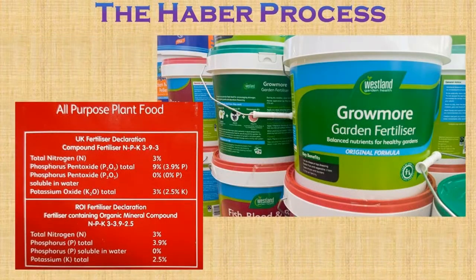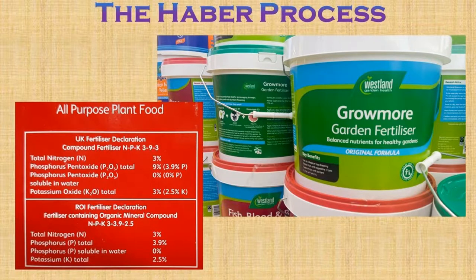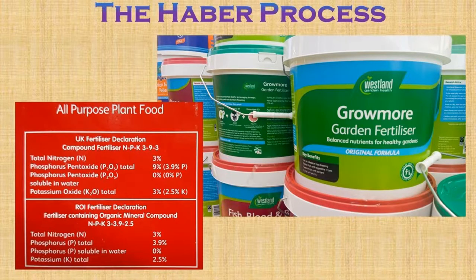Most fertilizers used by commercial farmers are inorganic fertilizers. On the packets you will see NPK values. These refer to the percentages of nitrogen, phosphorus and potassium that they contain — three of the most important elements for plant growth.